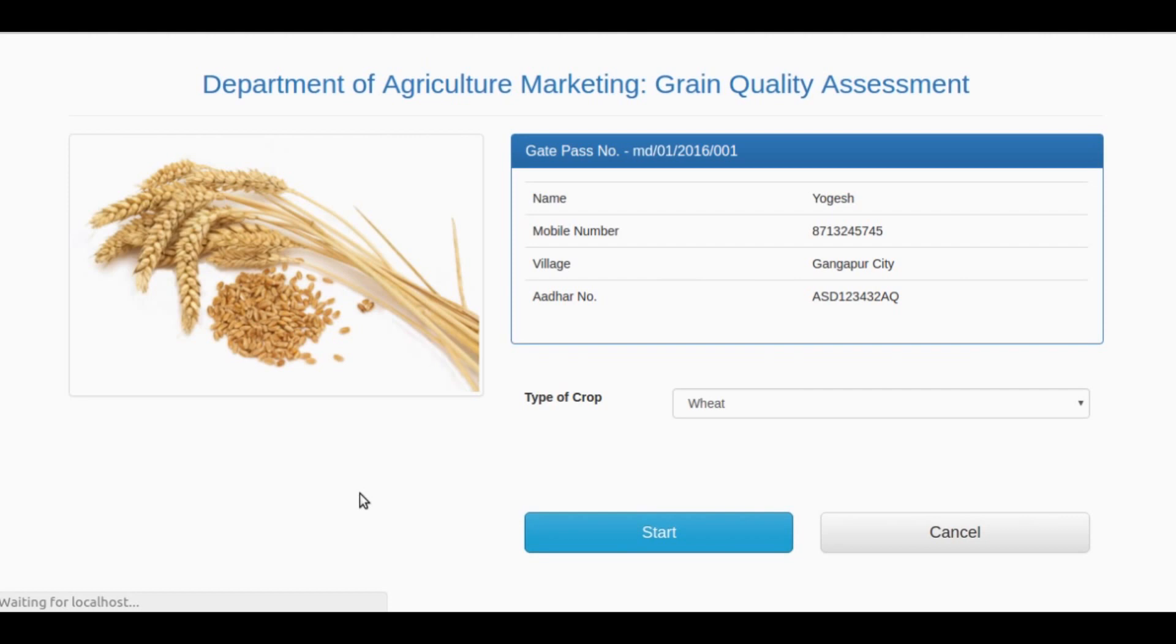By clicking start, we initiate the scanning process first. It takes around 40 seconds for the scanner to capture the entire sample. In next 20 seconds, the classification will be done. To cut some time, let's fast forward this process.